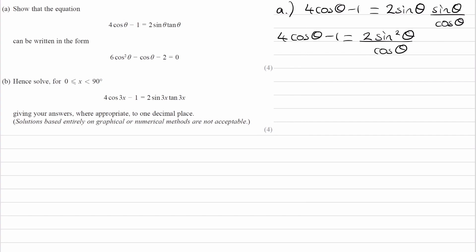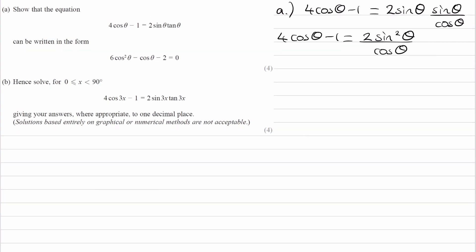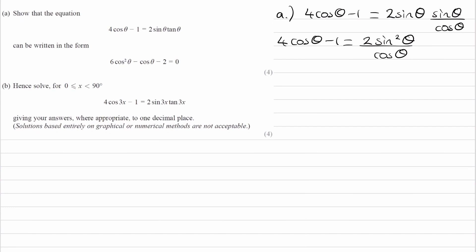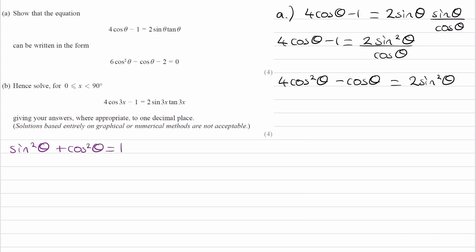And then I'm going to multiply both sides by cos theta. The left hand side then becomes 4 cos squared theta minus cos theta, equal to 2 sine squared theta. And then I can use the identity sine squared theta plus cos squared theta equals 1. Therefore sine squared theta is 1 minus cos squared theta.